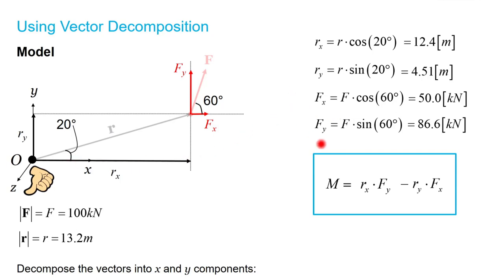Similarly, with our force components, Fx is smaller than Fy, and for that 60 degree angle and this orientation, we expect this component Fx to be smaller than Fy. We can now substitute all of these values into this equation and get that our moment is equal to 12.4 meters times 86.6 kilonewtons minus 4.51 meters times 50 kilonewtons, giving us a total moment of 848 kilonewton meters acting in a counterclockwise or positive direction.